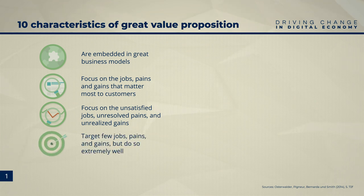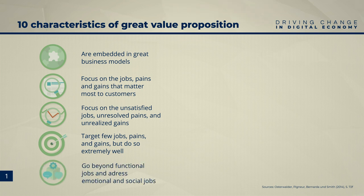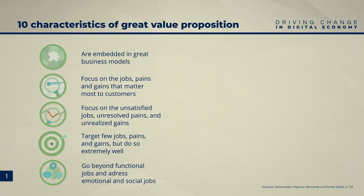Value propositions target only a few jobs, pains, and gains, but do so extremely well — otherwise you will lose clear communication and the customer may get confused. Great value propositions go beyond functional jobs; they additionally address emotional and social jobs. Emotional and social services may include things like customer support services, personalized recommendations, community building activities, and loyalty programs that incentivize repeat purchases. By offering emotional and social services, companies can differentiate themselves from competitors and build stronger relationships with their customers.